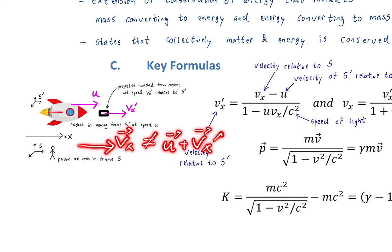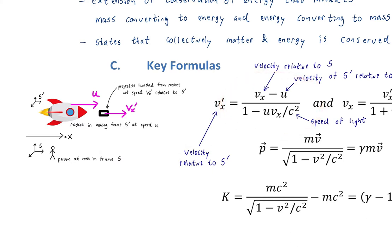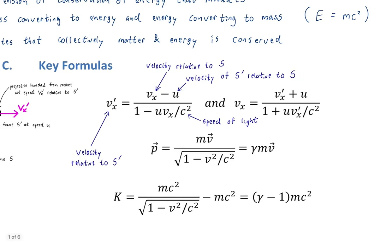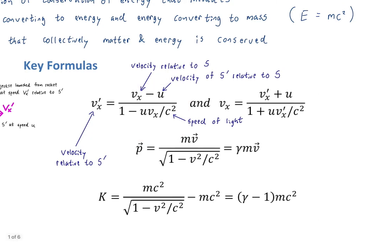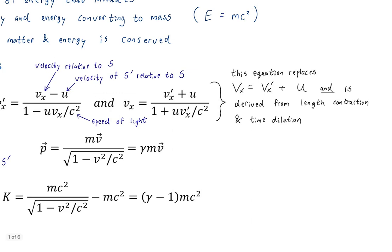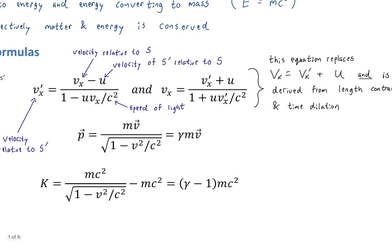Classically you would just sum the vectors, but relativistically we have a fractional expression with a denominator. The result must always be less than the speed of light — that's what this equation ensures. This equation replaces the classical Galilean relativity equation and is derived from length contraction and time dilation. It comes directly from thinking about space-time coordinates using length contraction and time dilation, though we won't do a full derivation here.